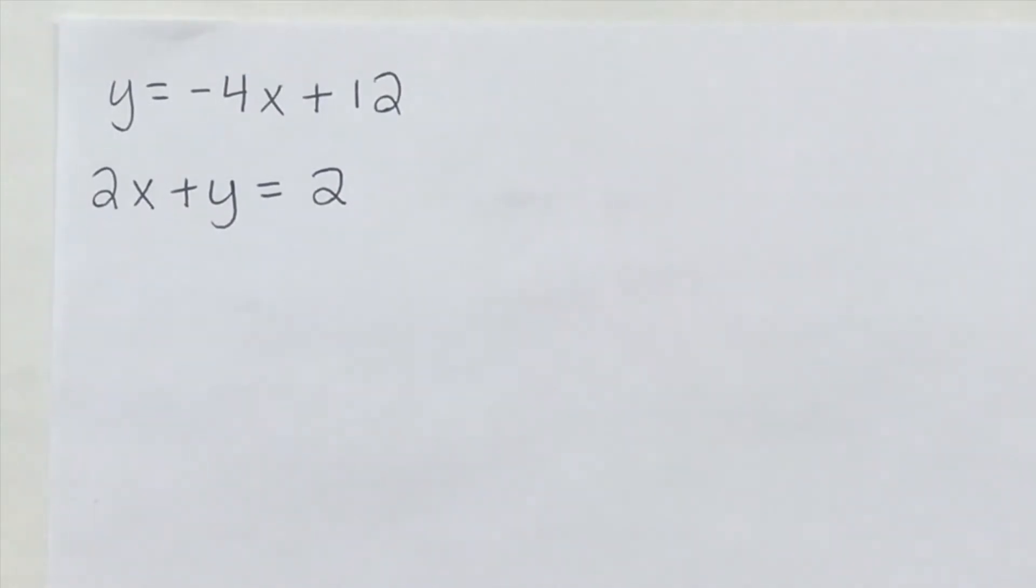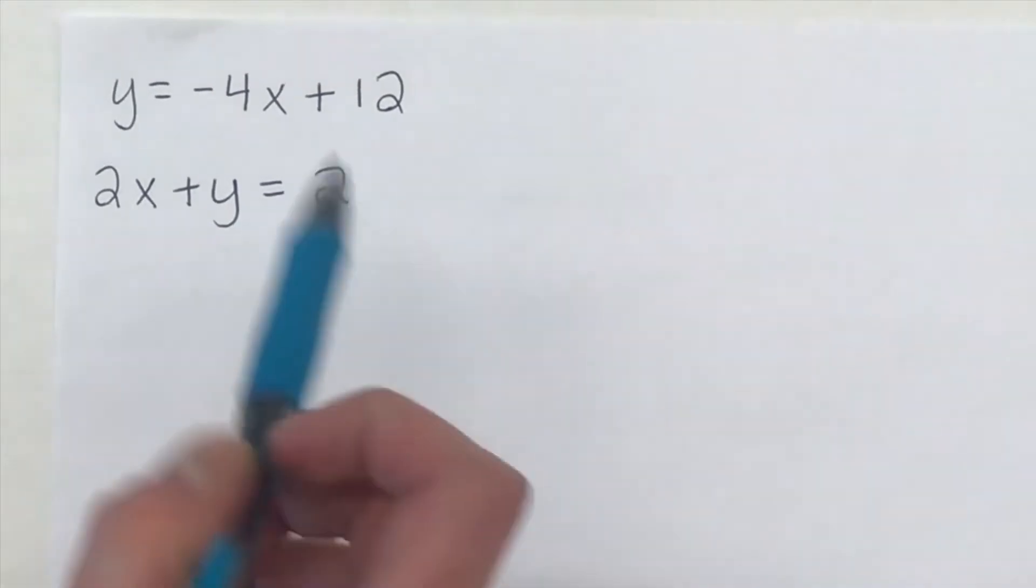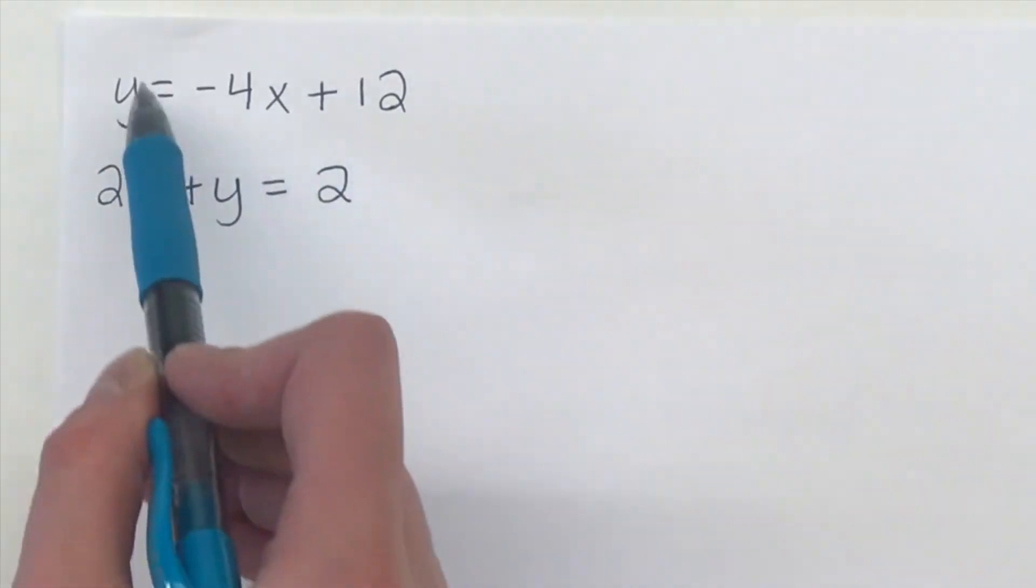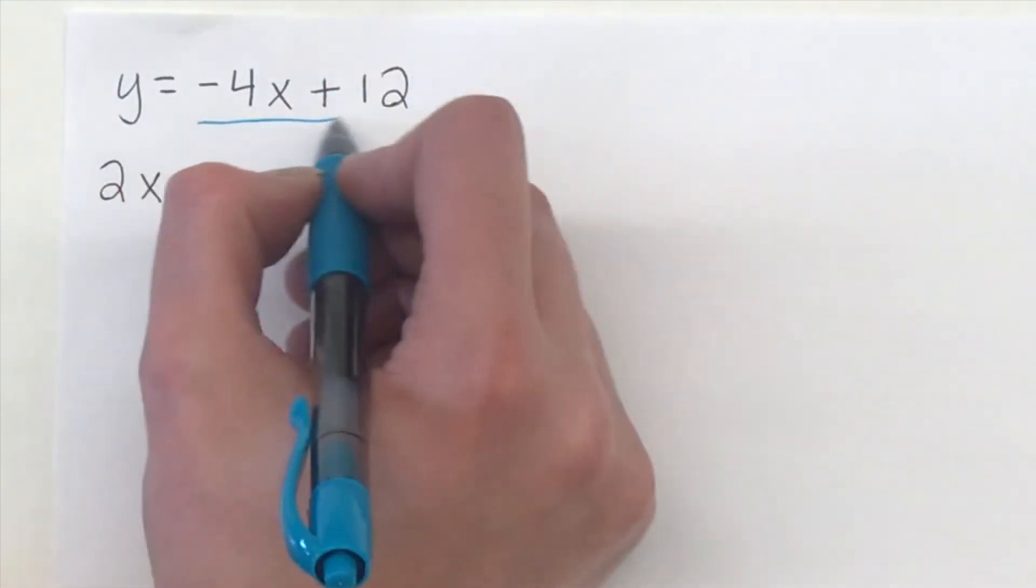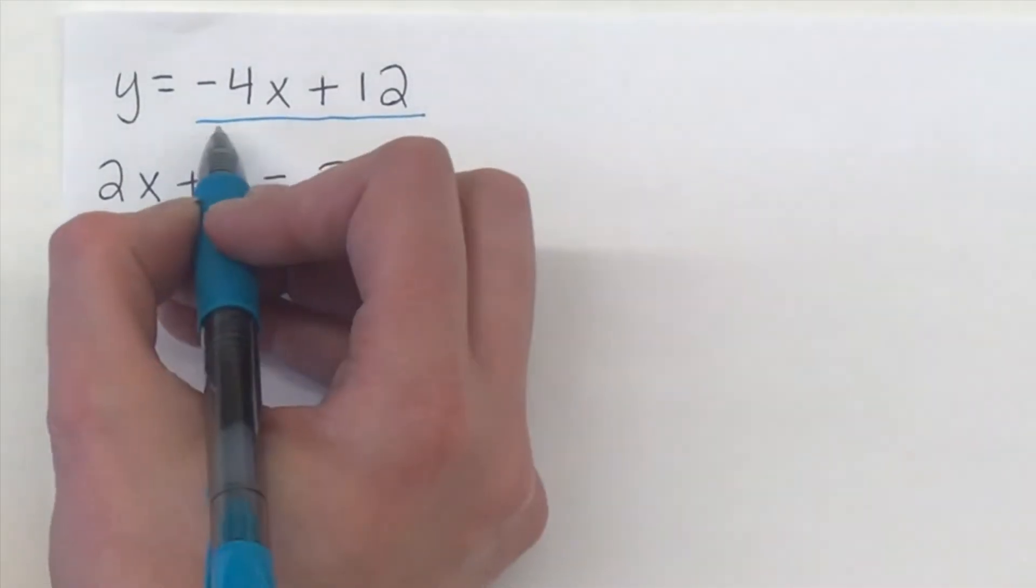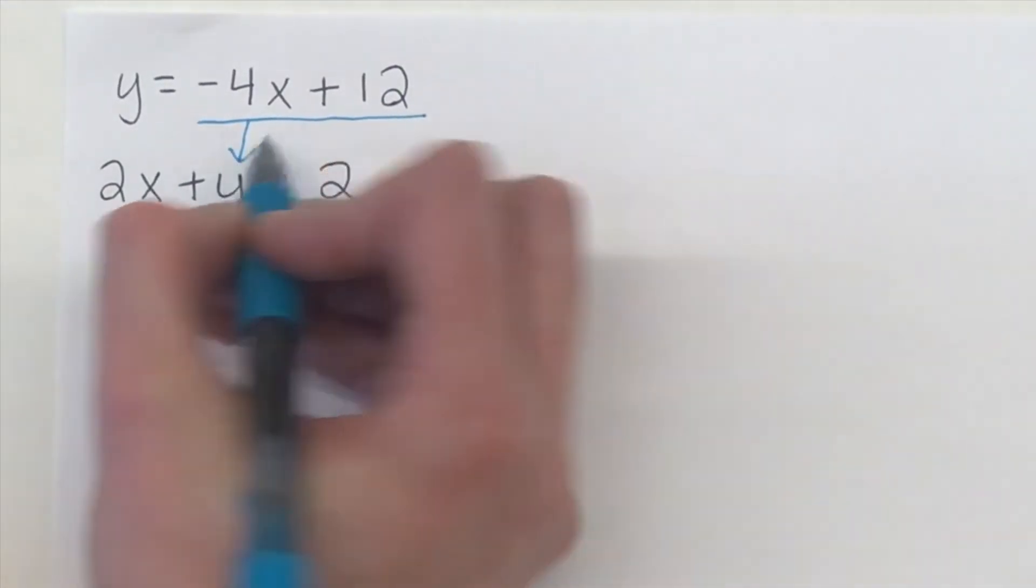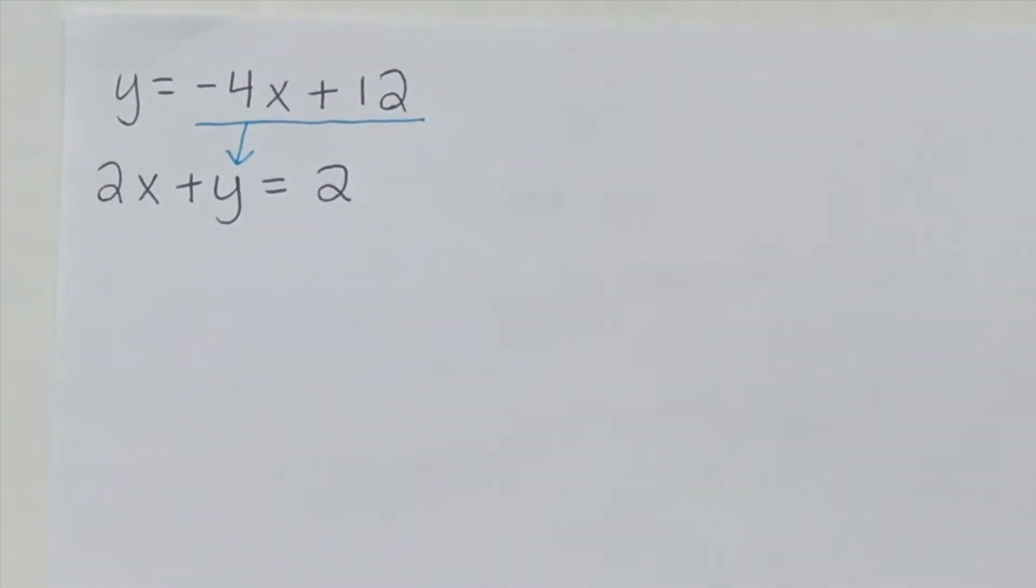So now we're going to look at another example of substitution, but this time both equations are not in slope-intercept form. As you can see, this equation has a variable that's isolated. The y is isolated, which tells us that's what we want to substitute in. So we are going to take this negative 4x plus 12, and we're going to replace it or substitute it into the bottom equation for the y at the bottom.